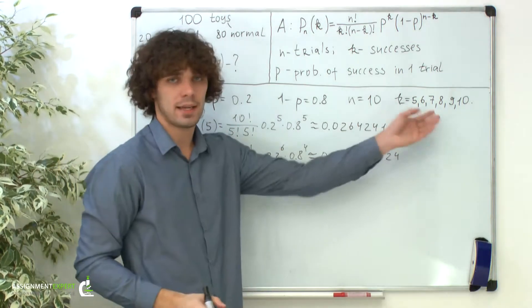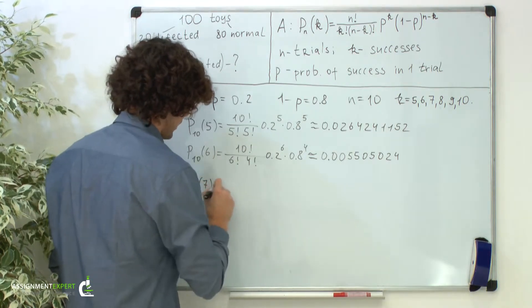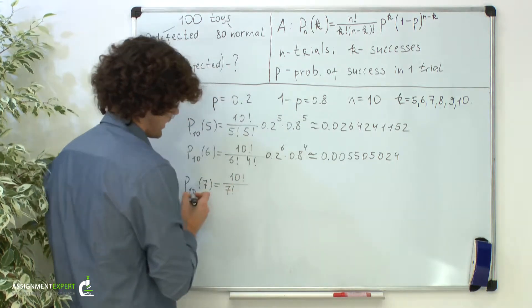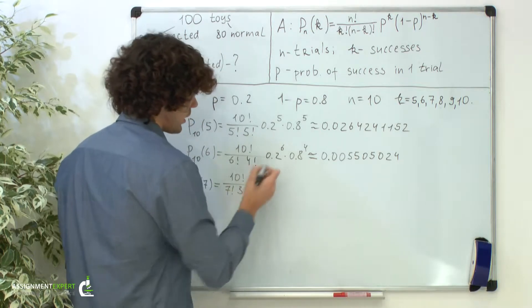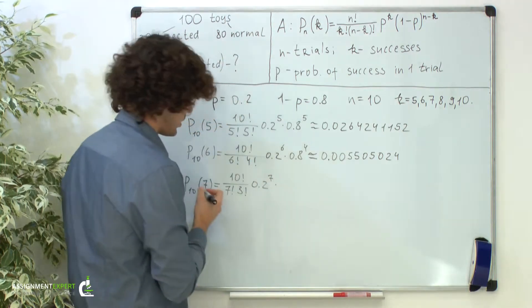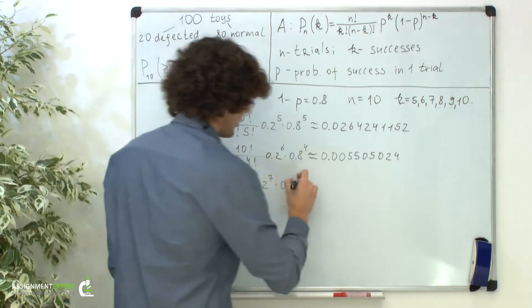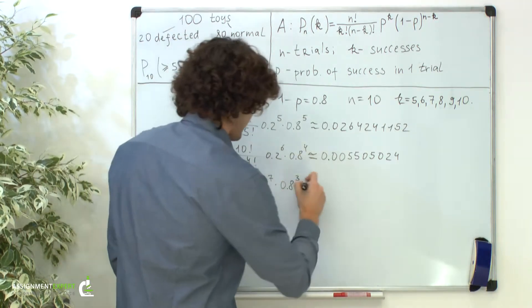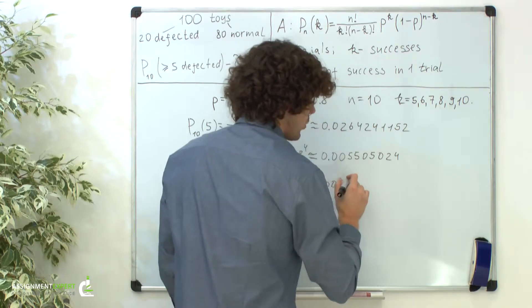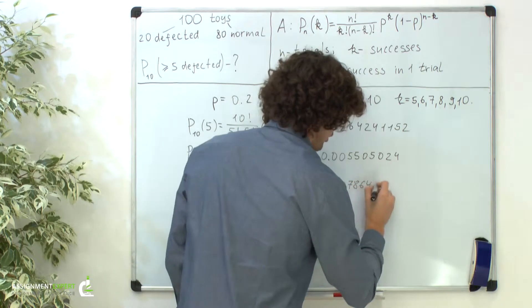Now the case when k is 7: the probability of 7 out of 10 equals 10 factorial over 7 factorial times (10 minus 7), which is 3 factorial, times 0.2 raised to the seventh power, times 0.8 raised to the power of 10 minus 7, so we have cubed here. This is approximately 0.00786432.